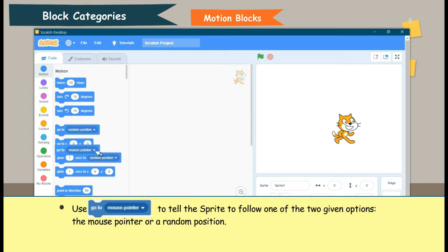Use Go To Mouse Pointer to tell the sprite to follow one of the two given options, the mouse pointer or a random position.